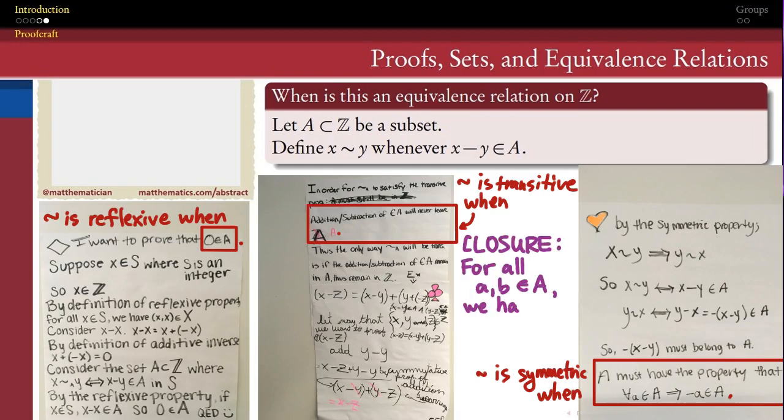First of all, the closure property, which is the correlate of this transitive property here. Closure means that for any two elements of my set, their sum or their product or whatever their combination using the operation in our group needs to also belong to the set. We can't leave the set when we combine together two elements of that set. So the closure property of groups comes from this motivation here in this example.